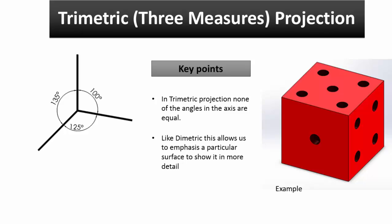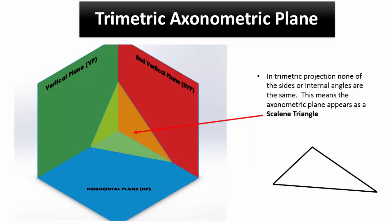In trimetric projection, none of the angles in the axis are equal. Like dimetric, this allows us to emphasize a particular surface to show it in more detail. In trimetric projection, none of the sides or internal angles are the same. This means the axonometric plane appears as a scalene triangle.